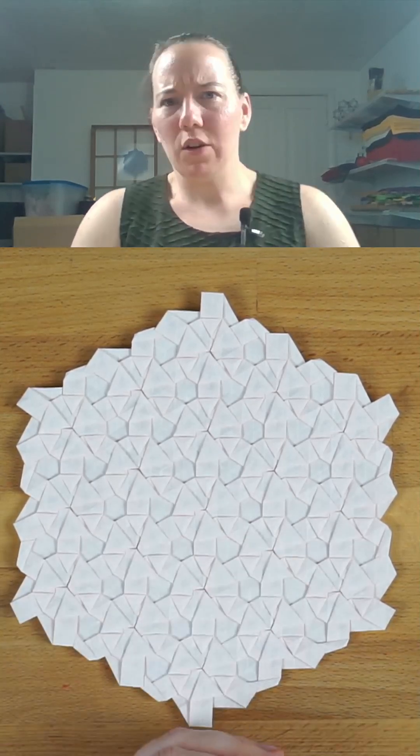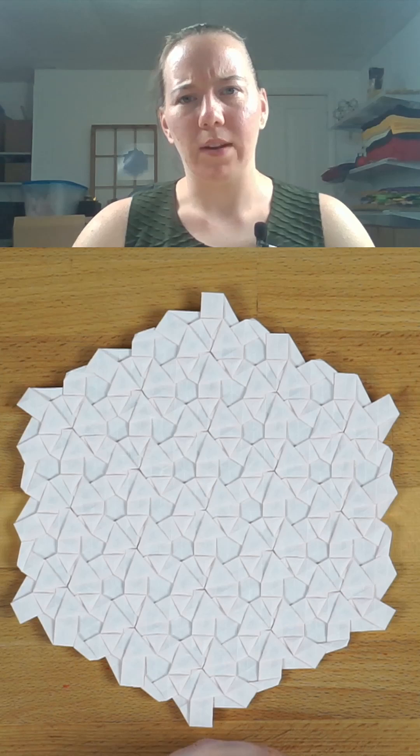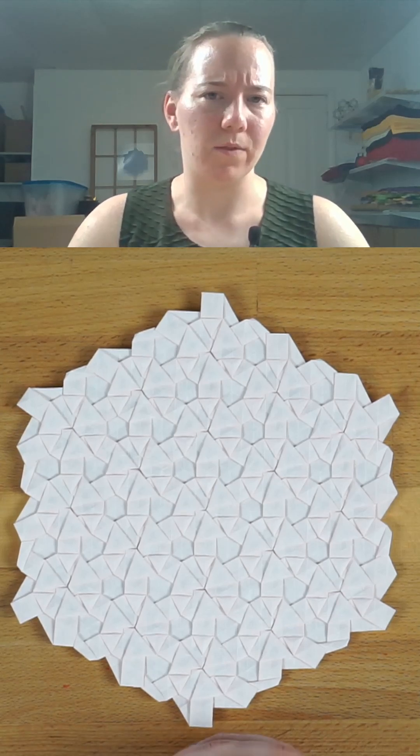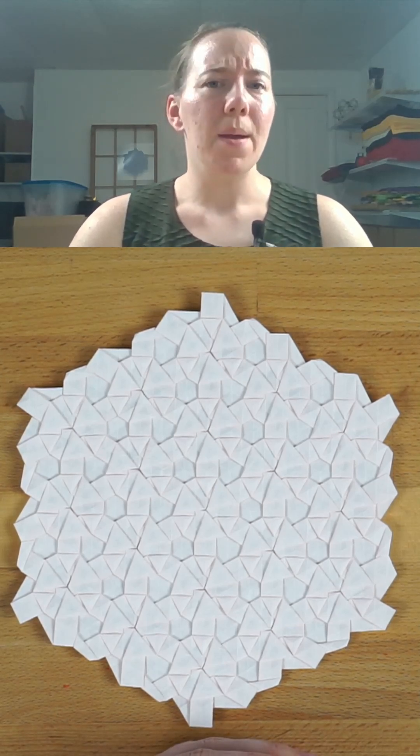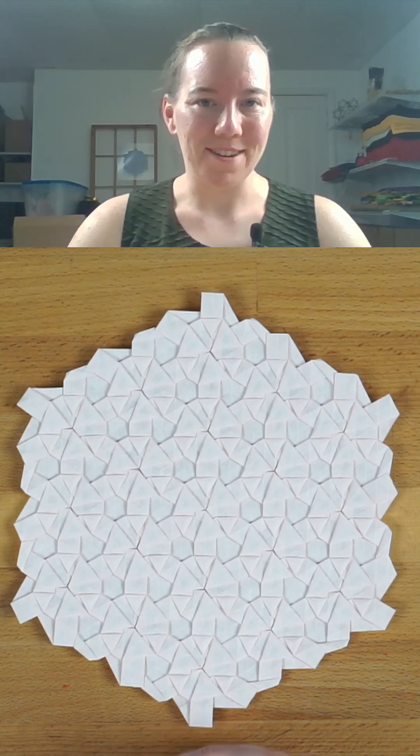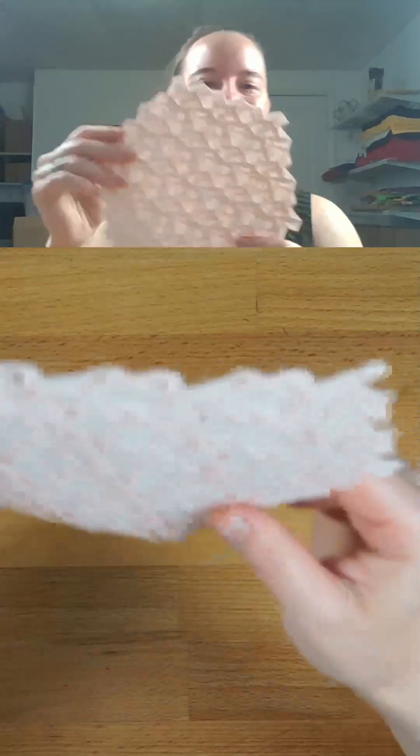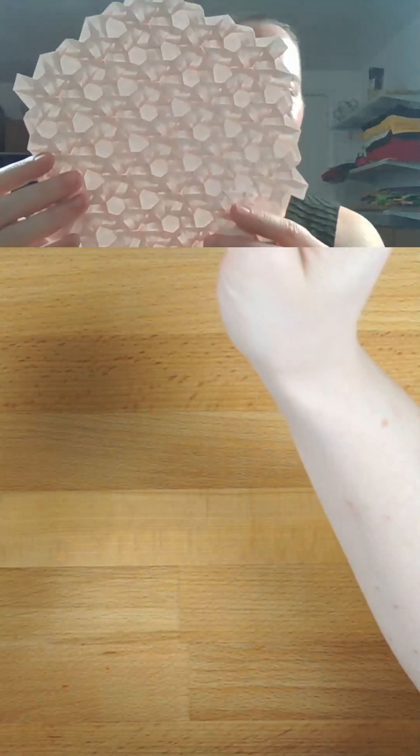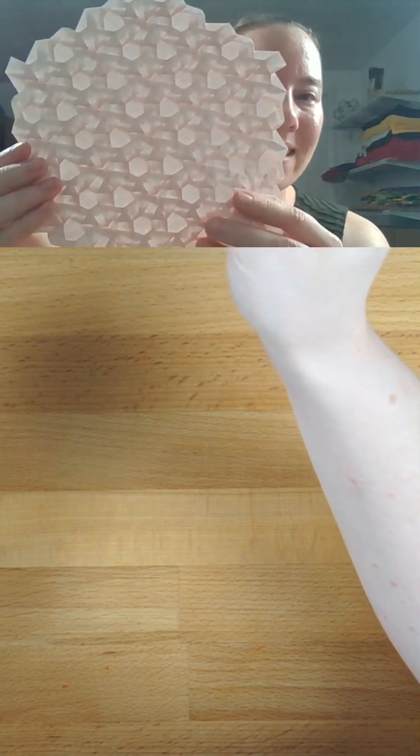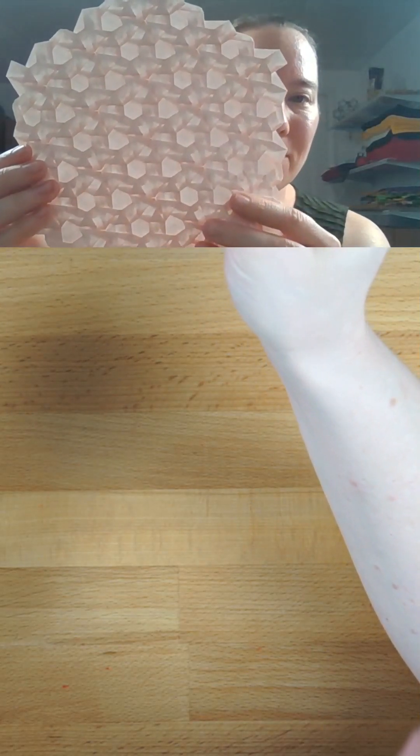I thought that you couldn't use two different kinds of triangle twists in a hexagons and triangle sixfold tiling. Here we go. I was wrong. This tessellation uses both a closed and an open triangle twist.